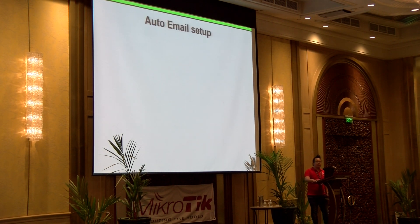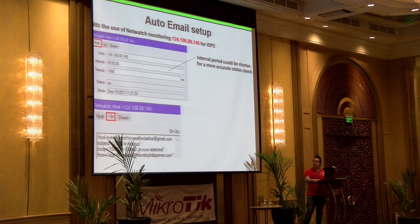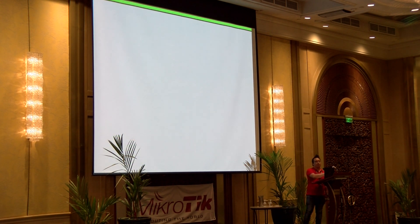The second email is for 124. When you could not ping 124, this is your Netwatch on up: the tool sends email that ISP2 is up; and when down, that ISP2 is down. So it's now going to be useful.